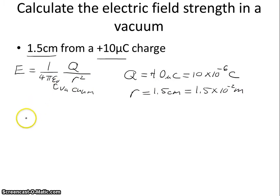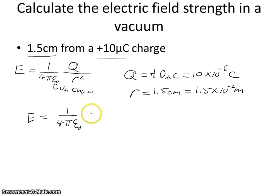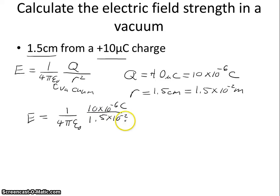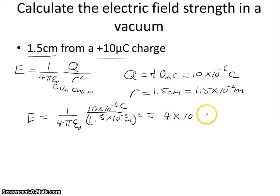Now that we've done our conversions, we're ready to find the electric field strength 1.5 centimeters from our charge. We write 1 over 4 pi epsilon naught, times our charge of 10 times 10 to the minus 6 coulombs, divided by 1.5 times 10 to the minus 2 meters squared. Multiplying this all out, we get 4 times 10 to the eighth newtons per coulomb. Notice that this is a positive quantity.